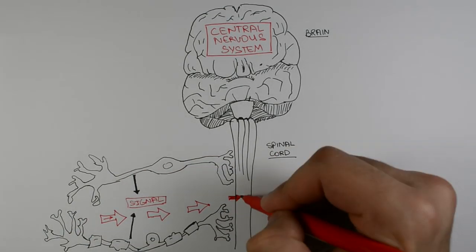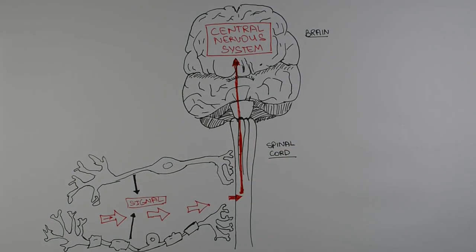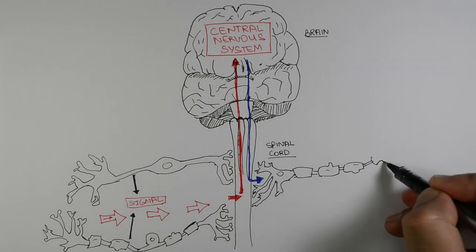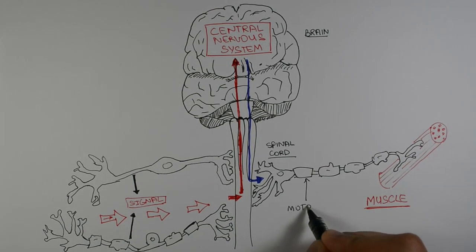The central nervous system also sends out signals to our body through motor neurons which attach to our muscles and help us breathe, smile, move and perform any other action.